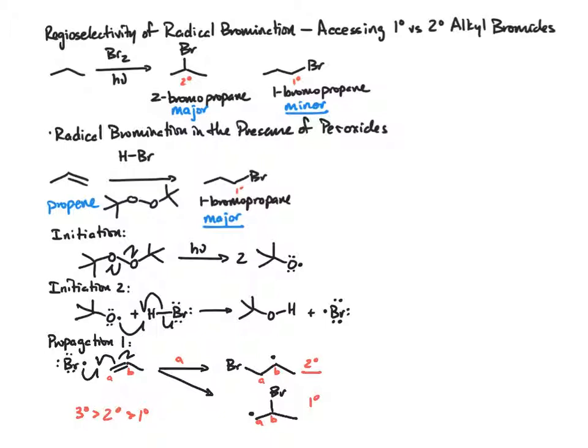Now, from here, this secondary radical is going to go into the second propagation step, reacting with HBr. This is going to be the proton source that generates our propagating radical. The carbon radical will abstract hydrogen.